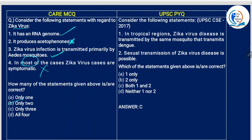Next: consider the following statements. In tropical regions, Zika virus disease is transmitted by the same mosquito that transmits dengue — yes. Sexual transmission of Zika virus disease is possible — of course, yes, because the virus can transmit very rapidly from one person to another. So both statements are correct.